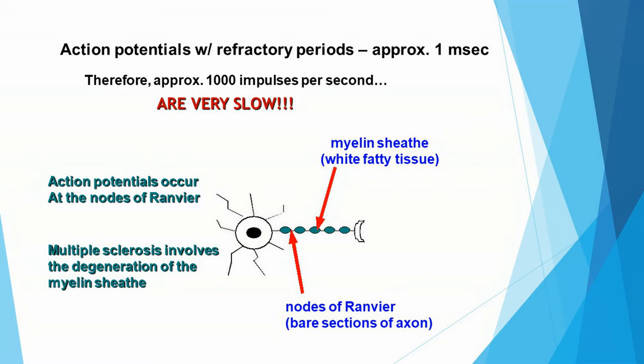You know that action potentials with their refractory periods take about a millisecond. That means that your neurons can only fire at a thousand impulses per second without the myelin sheath. This is actually too slow for your nervous system to function, just to put things into perspective.